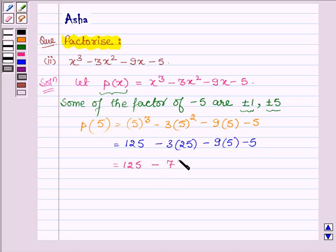This is 75 minus 45 minus 5, which is further equal to 125, and on adding all these negative terms we get minus 125, which is further equal to 0.